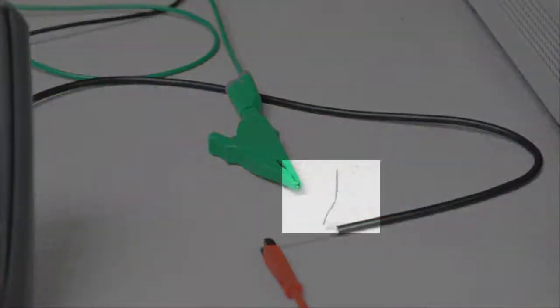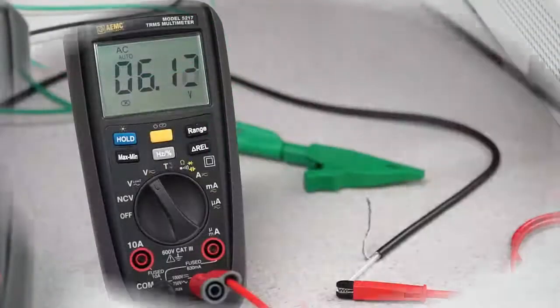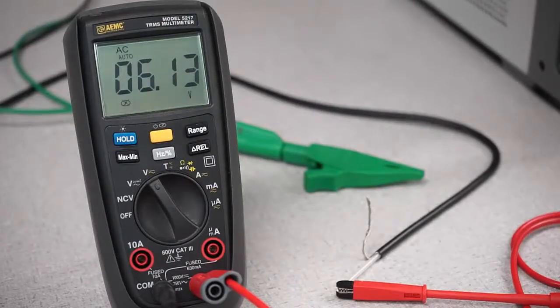For our first measurement, we will leave the cable shielding ungrounded. As you can see, the noise voltage being generated within the cable is over 6 volts, a voltage that could potentially corrupt any data sent through the cable.